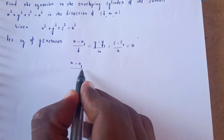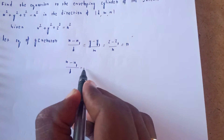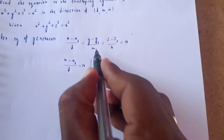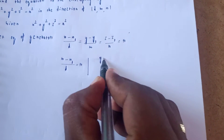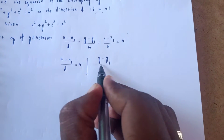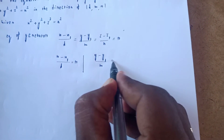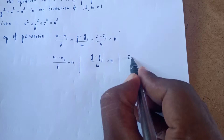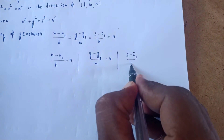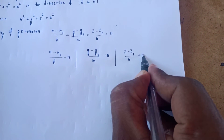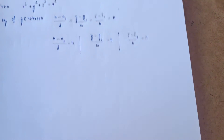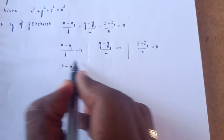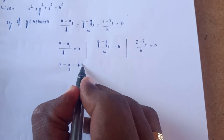From x minus x1 by L = R, we get x minus x1 = LR. Similarly from y minus y1 by M = R, we get y minus y1 = MR. And from z minus z1 by N = R, we get z minus z1 = NR.